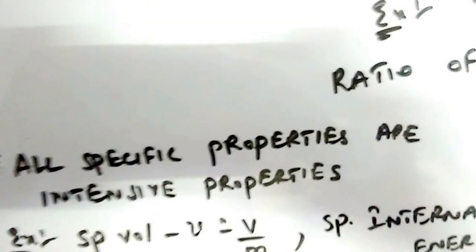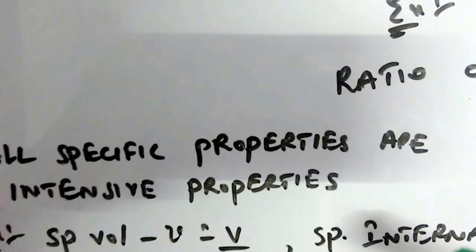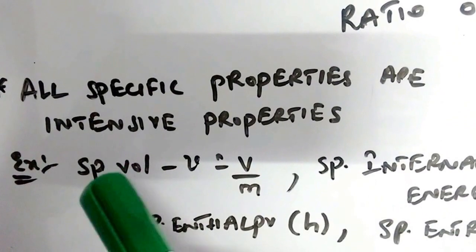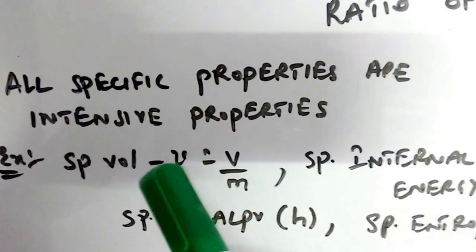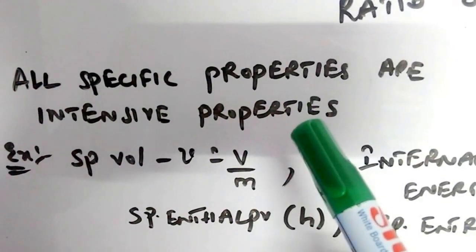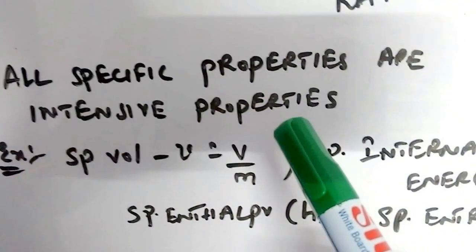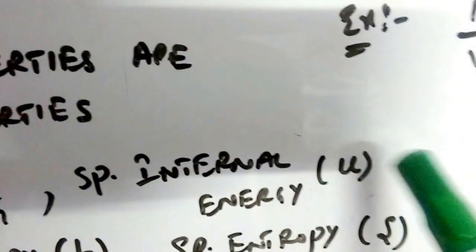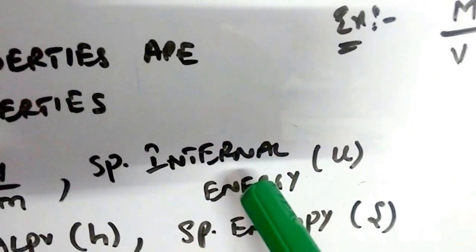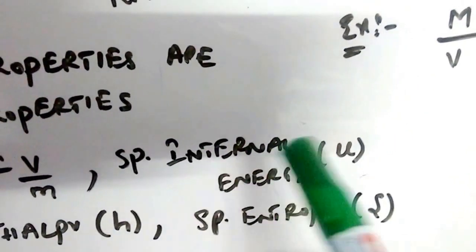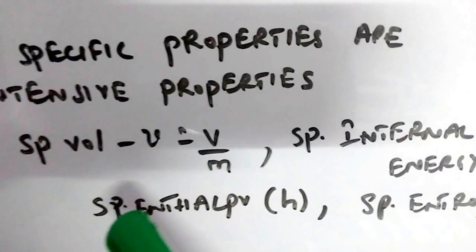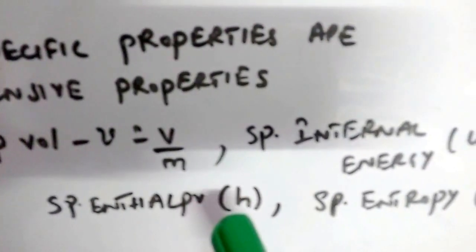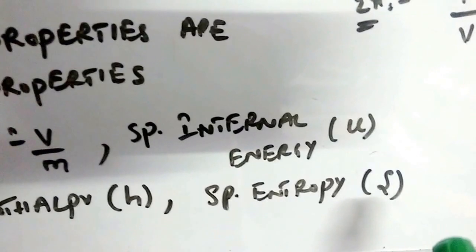One more important point: all specific properties are intensive properties. For example, specific volume means volume per unit mass — even though volume is an extensive property, volume per unit mass is an intensive property. Similarly, specific internal energy (internal energy per unit mass) is an intensive property, even though internal energy is extensive. Likewise, specific enthalpy and specific entropy are also intensive properties.